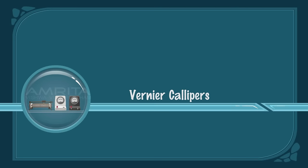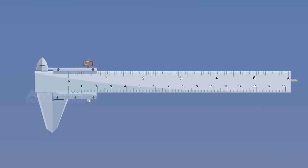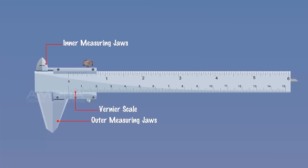Vernier Calipers. The main parts of Vernier Calipers are: Inner Measuring Jaws, Outer Measuring Jaws, Vernier Scale, Retainer, Main Scale, and Depth Measuring Prong.